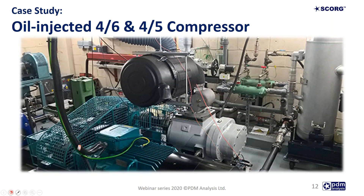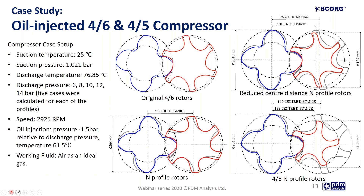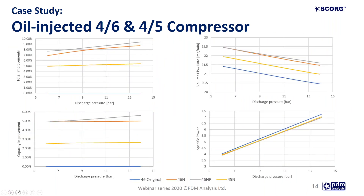This example of an oil-injected compressor shows the process of optimization of the compressor configuration for a selected duty to maximize performance. The study was performed based on an existing compressor with a 4+6 configuration of rotor lobes, retrofitting it with a rotor of N profile having the same diameter and centre distance as the original rotor, rotors with reduced centre distance, and lastly with a 4+5 configuration using N rotor profile. SCORG allows automation of the optimization process with pressure, speed, and temperature loops. Five cases were run for each profile setup with different discharge pressures, and it was observed that the 4+6 N profile with reduced centre distance is the optimal solution, offering minimal specific power and maximum flow rate.